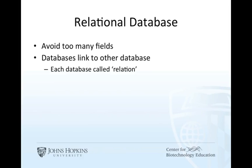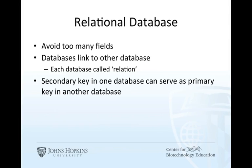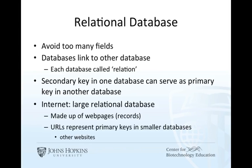Basically, IMDB, like the biology databases, tends to be a relational database. The idea is to avoid too many fields in one database — the goal is to link smaller databases together. Each smaller database can be called a relation. The concept is that a secondary key in one database can serve as a primary key in another. We can think of the internet as one large relational database, because every time we access a page on the internet it's essentially a text file with markup. Whenever you click on a link, you're clicking on a primary key to another database. So URLs essentially represent primary keys.